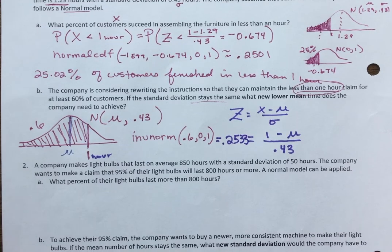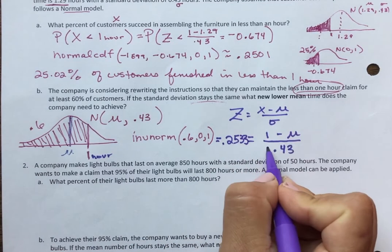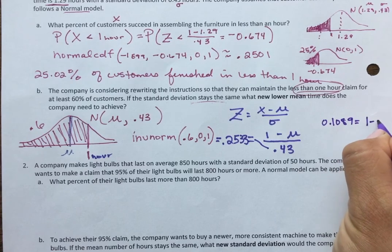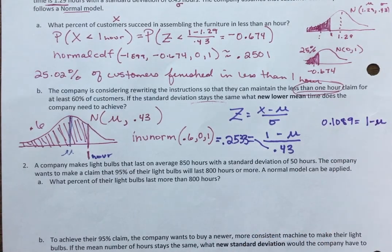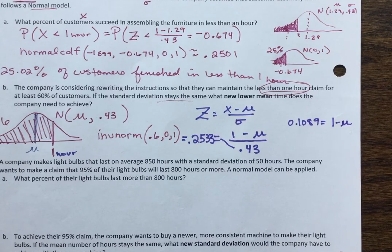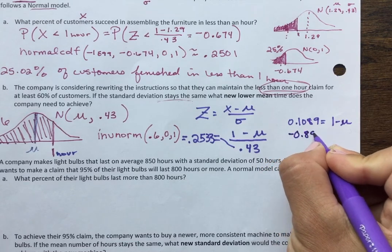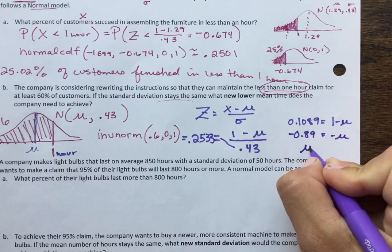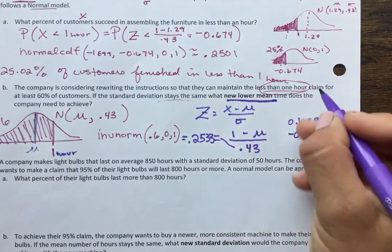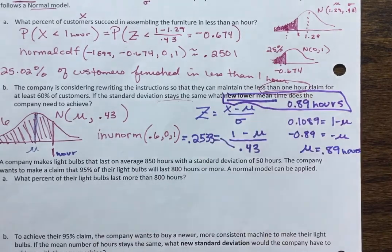I've got to cross-multiply. 0.2533 times 0.43. I'm cross-multiplying. And I get 0.1089 equals 1 minus mu. That mean I'm looking for. And then from there, I can subtract over the 1. And I get negative 0.89 equals negative mu. So our new mean needs to be 0.89 hours. So to answer the question, the new lower mean needs to be 0.89 hours. And I'd need to write that in an actual complete sentence.